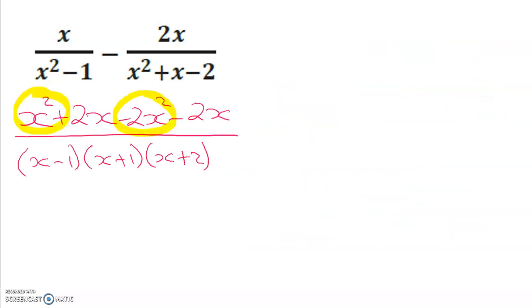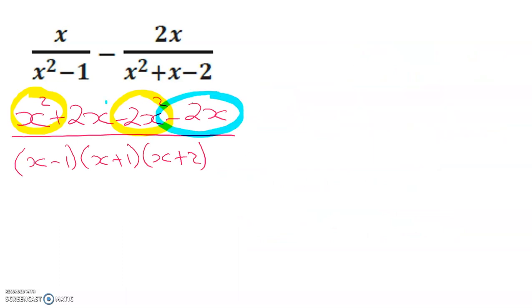Now I'm going to combine my like terms. x² - 2x² is -x², and 2x - 2x, well that's just 0, they cancel out.